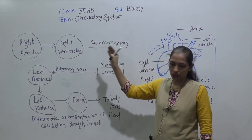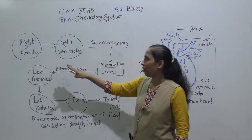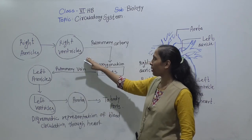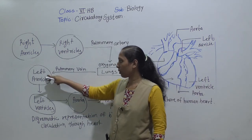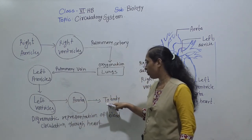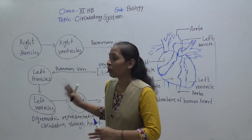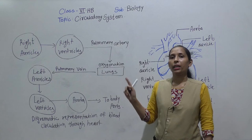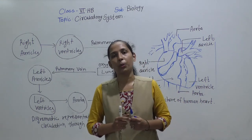To summarize the circulation: right auricle → right ventricle → pulmonary artery → lungs → pulmonary vein → left auricle → left ventricle → aorta → different body parts. This diagram should be drawn in your biology notebook. We will meet in the next video with the next topic. Thank you.